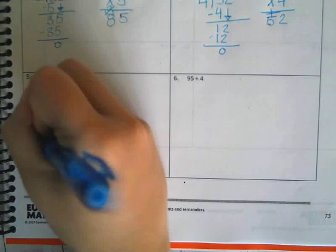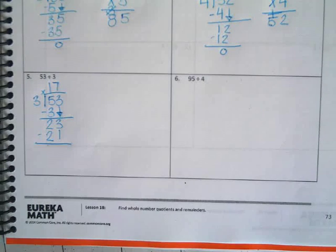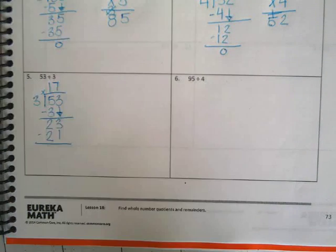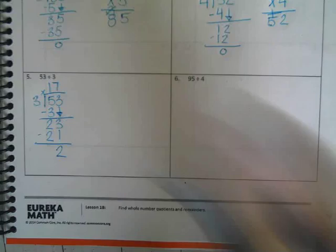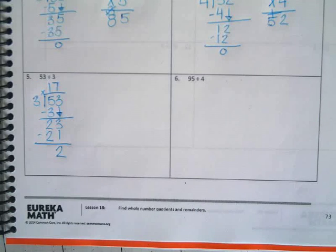So, I have a little extra. That's alright. Because 23 take away 21 is going to be 2. So, my answer is what? 17 with the remainder of 2. Yep, I have my remainder up here.